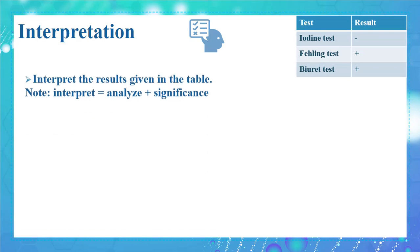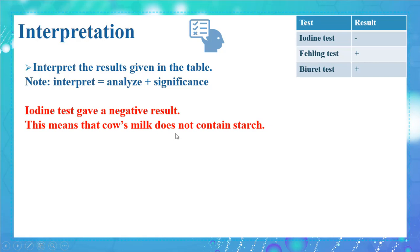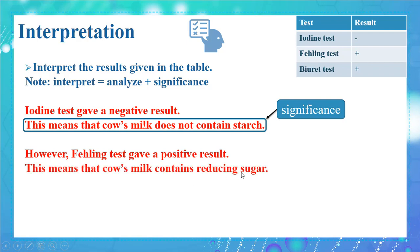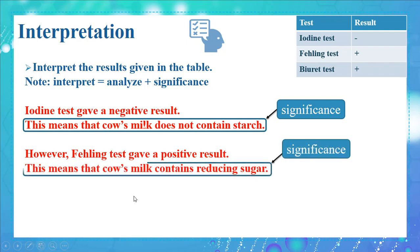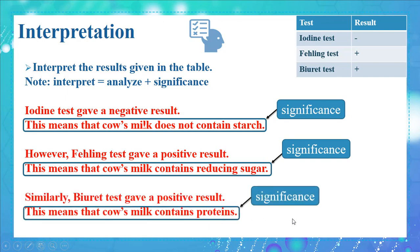Now interpret the results given in the table. Note that interpret means analyze plus give a significance. The iodine test gave a negative result — this means that cow's milk does not contain starch. However, the Fehling test gave a positive result — this means that cow's milk contains reducing sugar. Similarly, the biuret test gave a positive result — this means that cow's milk contains proteins.